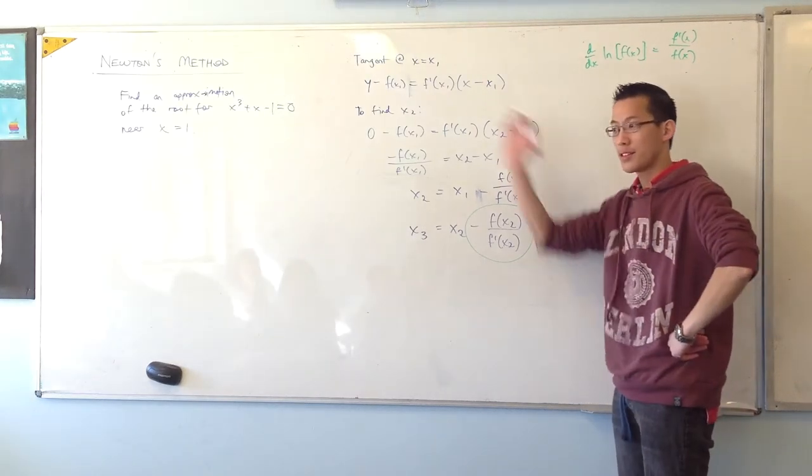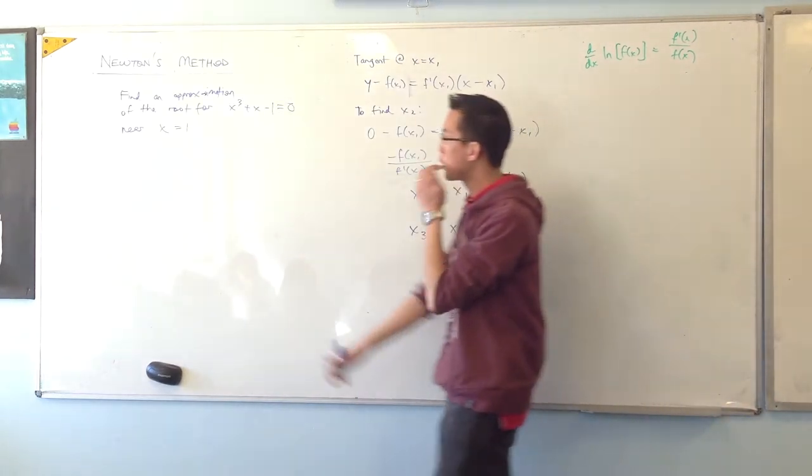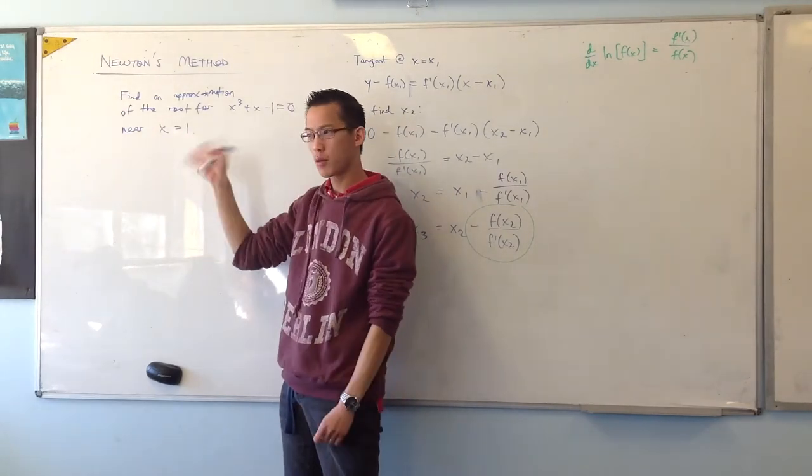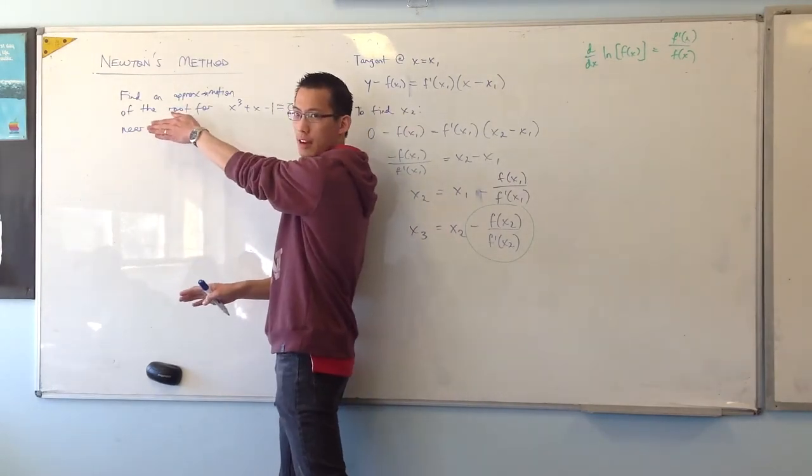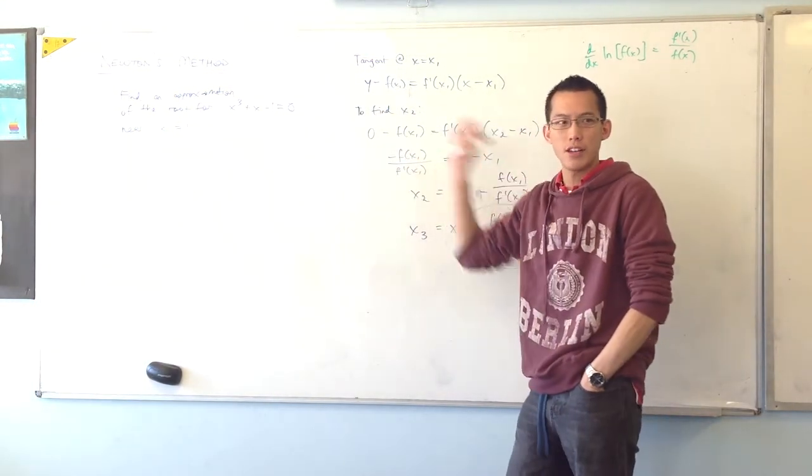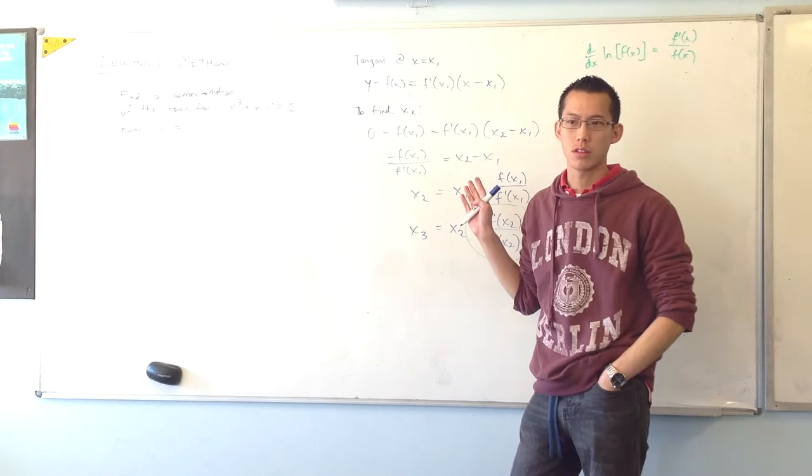Okay, so this is what I want to do. And again, they've given you a point here. Some questions they won't do that. They'll be like, find an approximation. How do we go about finding that there's some root somewhere and then use Newton's method to get closer to it?